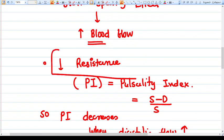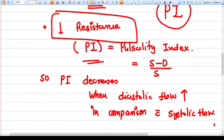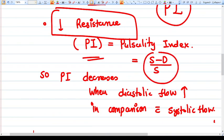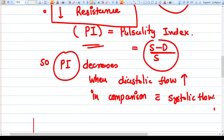What we see in the MCA Doppler is the PI, that is pulsatility index. The formula of the PI is S minus D divided by S. S means systolic velocity, D means diastolic velocity. If PI decreases, that means the diastolic velocity increases in comparison to the systolic flow. So resistance decreases.